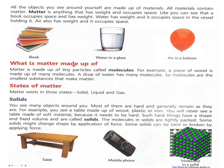Matter is made up of tiny particles called molecules. For example, a piece of wood is made up of many molecules, and a drop of water has many molecules. Molecules are the smallest substances that make matter. They are very small and we cannot see them with our naked eyes. We can only see molecules with the help of a microscope.